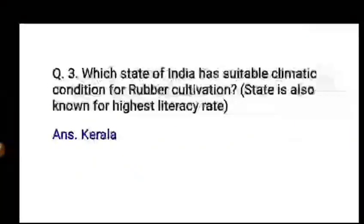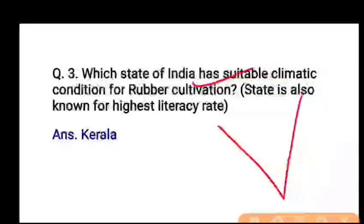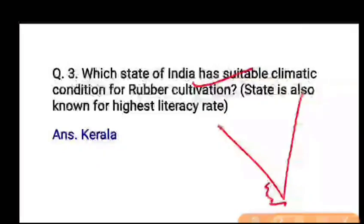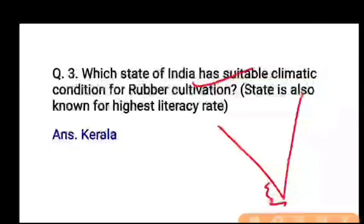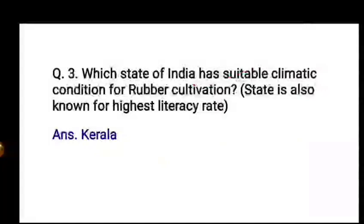Question 3: Which state of India has suitable climate conditions for rubber cultivation? Rubber is grown in Kerala. The coastal regions of Kerala receive very high rainfall. Also, Kerala is known for its high literacy rate, so the answer to question 3 is Kerala.